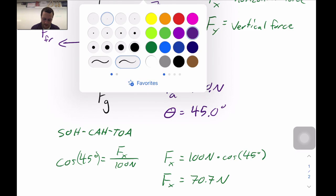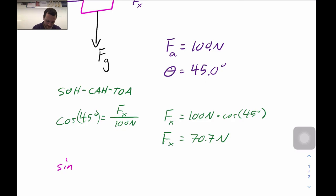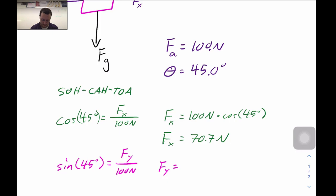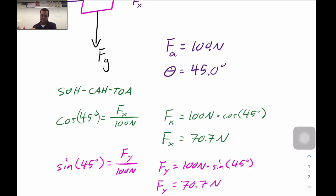For the vertical component Fy, opposite over hypotenuse gives us sine. The sine of 45 degrees equals Fy over 100 newtons, so Fy equals 100 newtons times the sine of 45 degrees. When you perform the calculation, you get the same value — Fy is also 70.7 newtons.